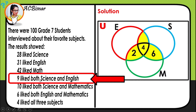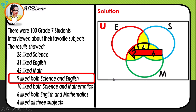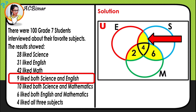For students who like both science and English, the given is 9. We locate the science-English intersection and subtract the center value: 9 minus 4 gives us 5. We write 5 in that intersection region.